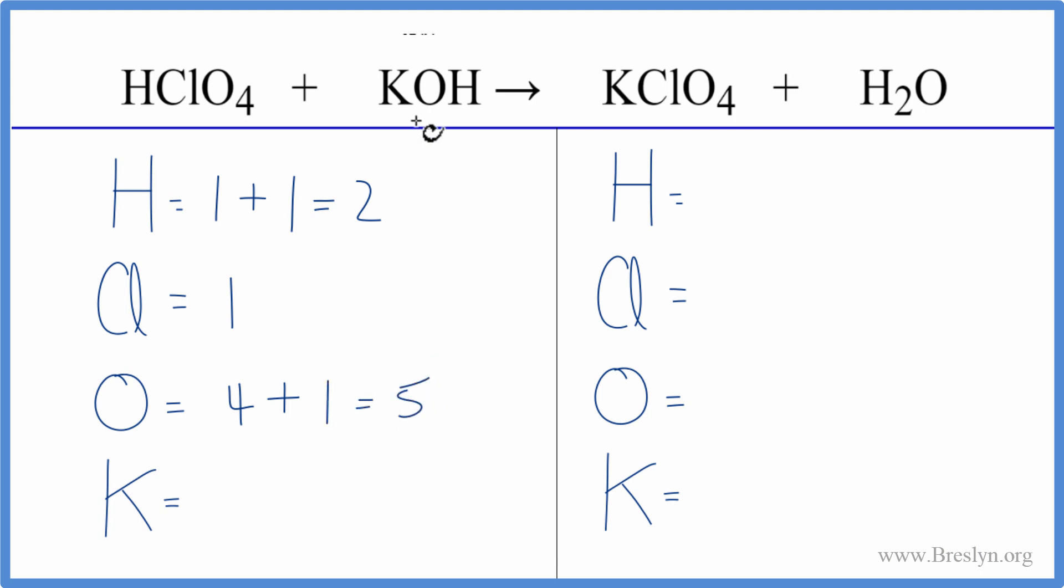That gives us five, and then one potassium. On the product side we have two hydrogens, one chlorine, four oxygens, plus we have an oxygen here in water, that gives us five, and then one potassium.